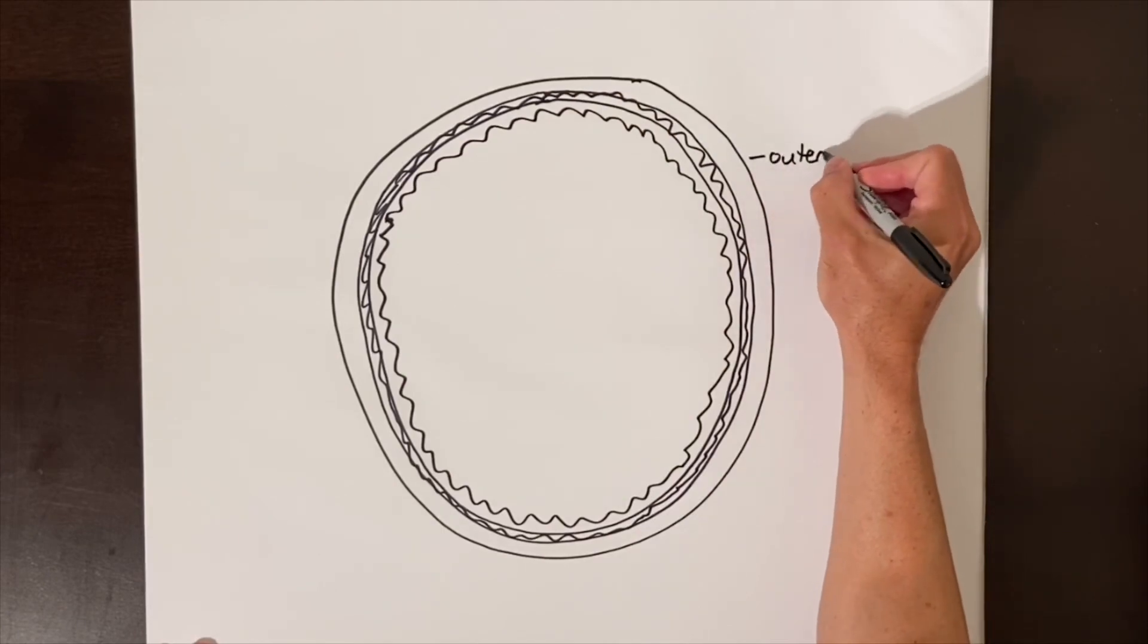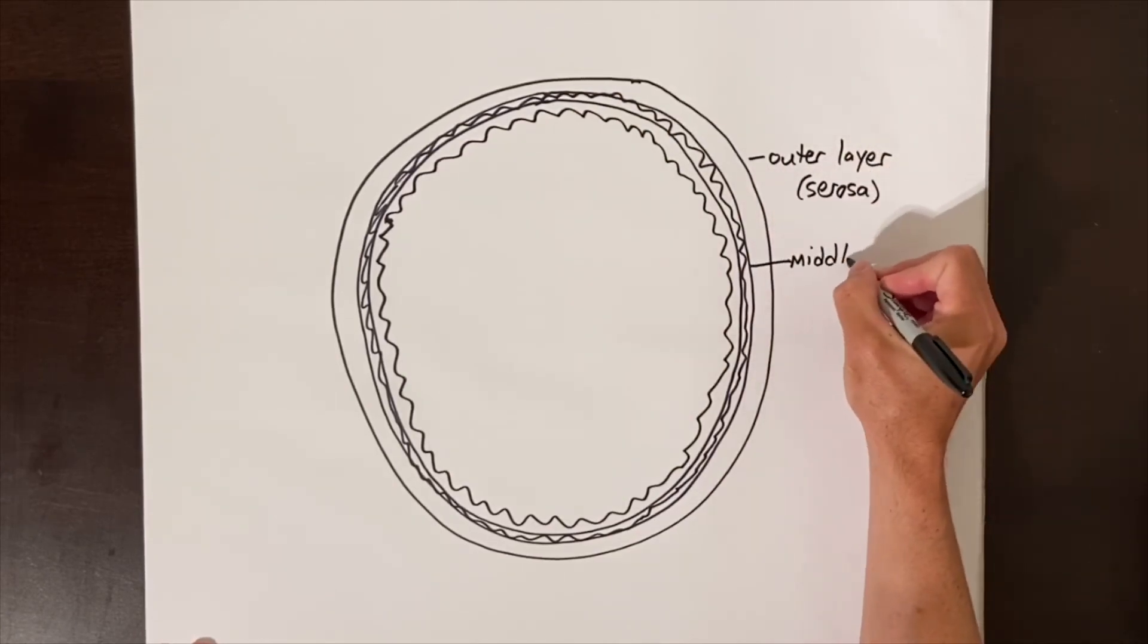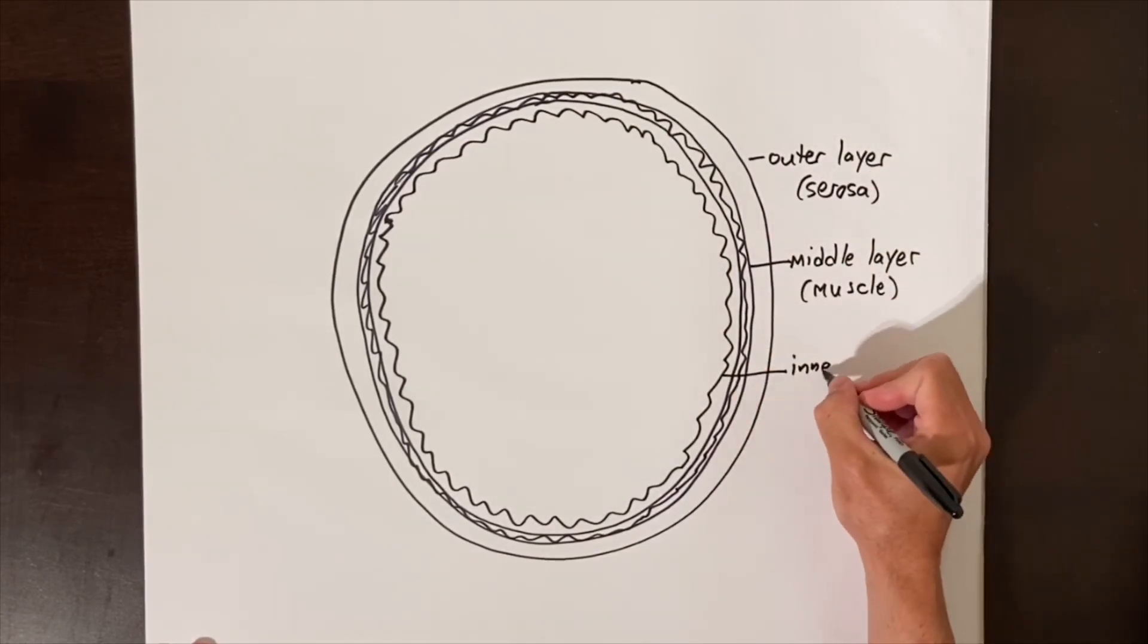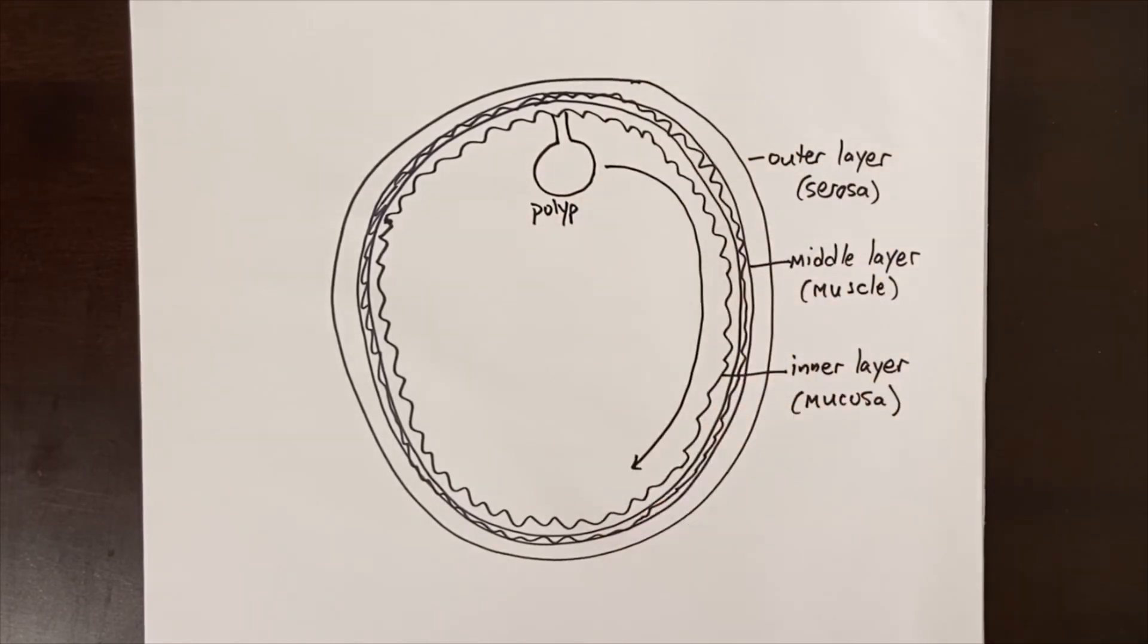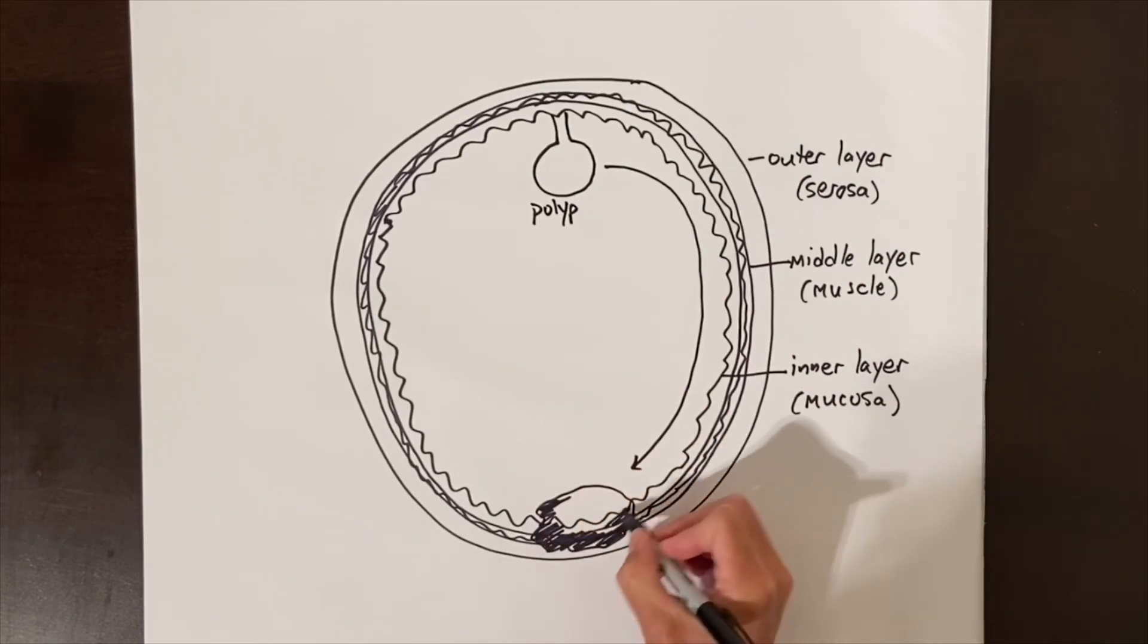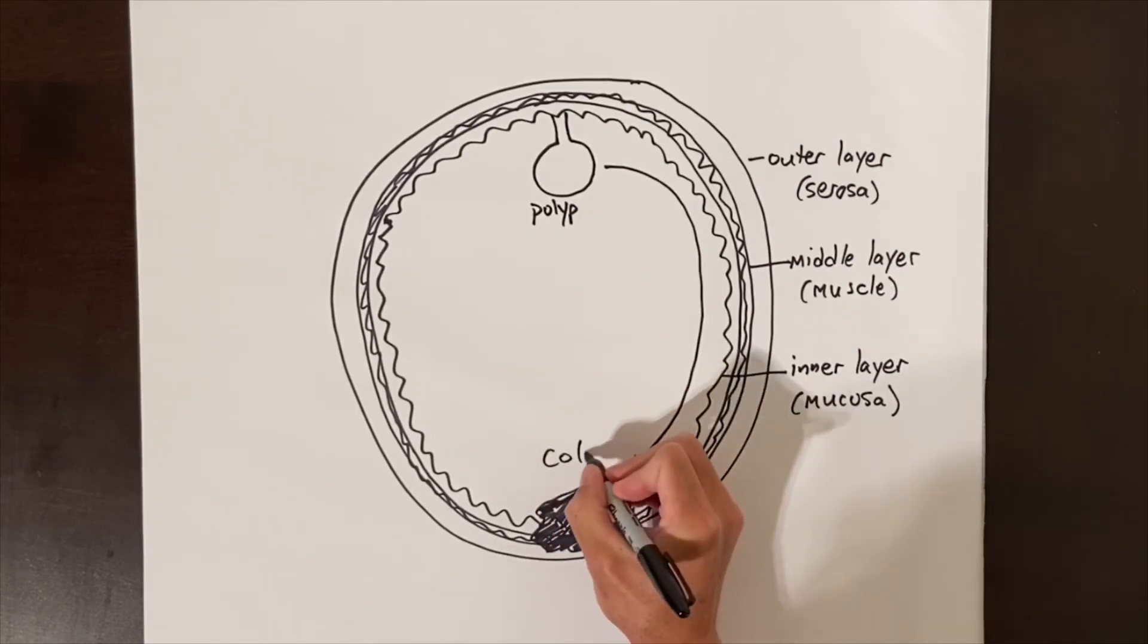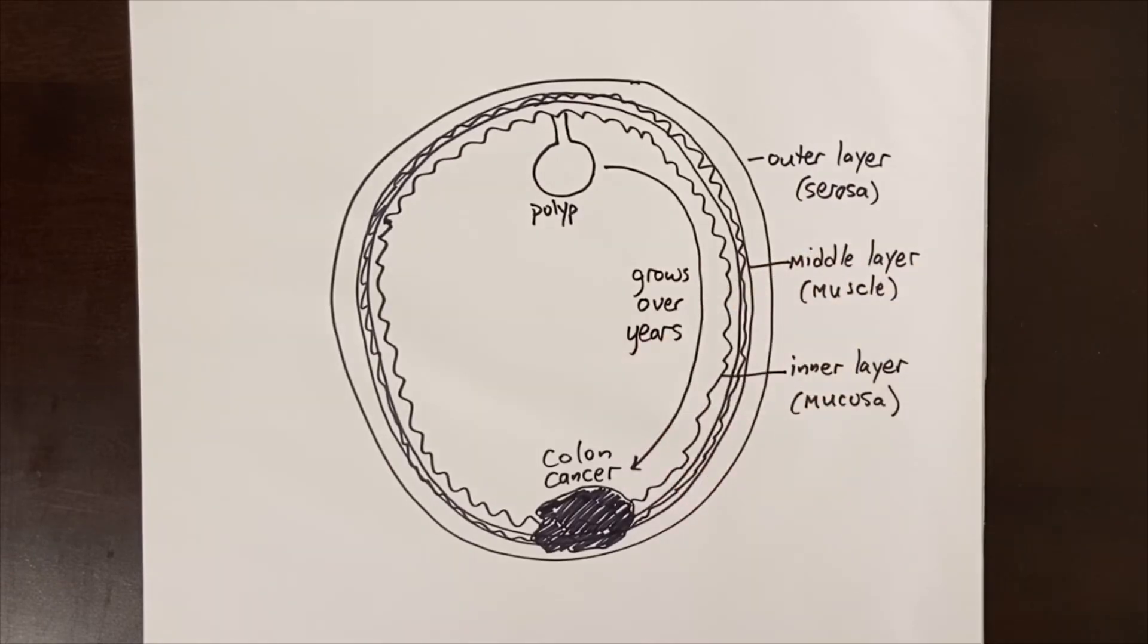I am commonly asked what causes colon cancer. In general, we think that most colon cancers grow from precancerous mushroom-like growths on the inside of the colon called polyps. When a polyp turns into a colon or rectal cancer, it is called adenocarcinoma. This is by far the most common form of colon and rectal cancer.